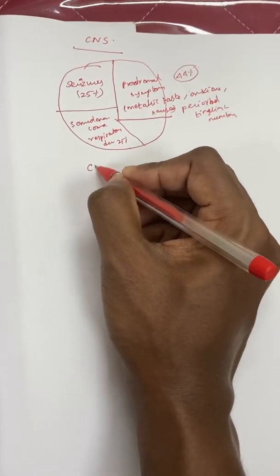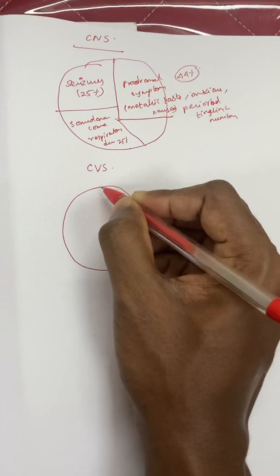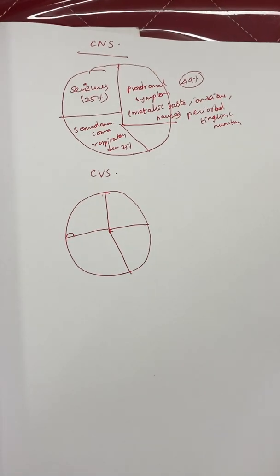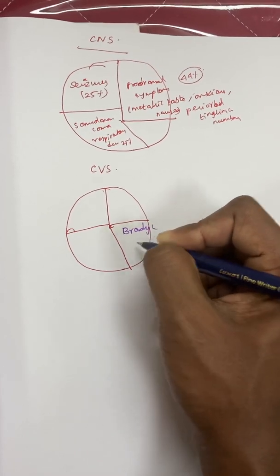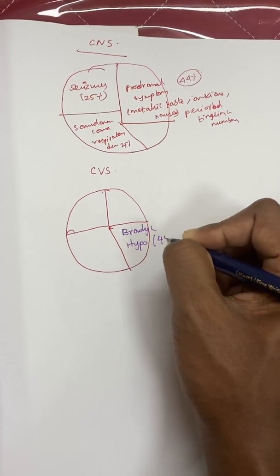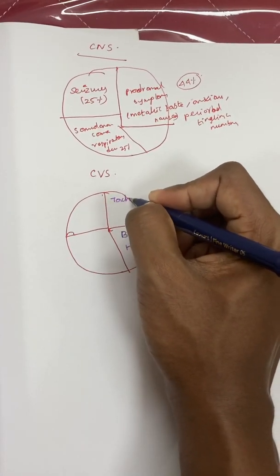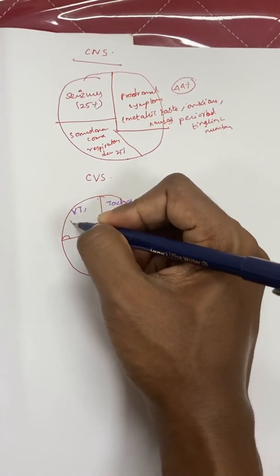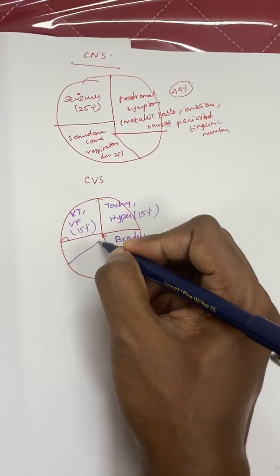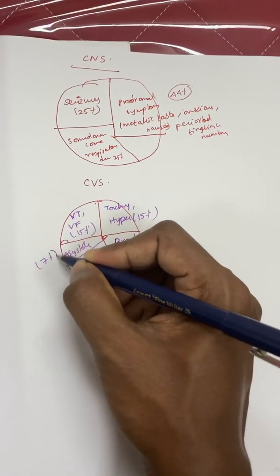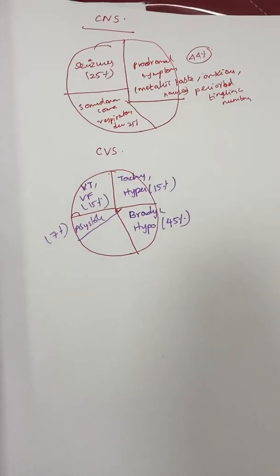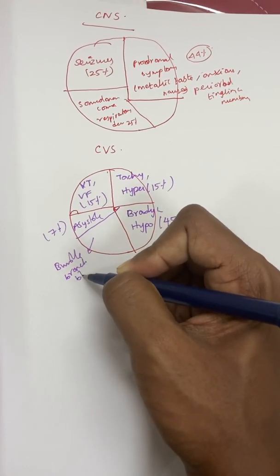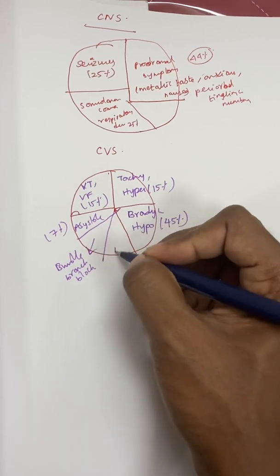In CVS involvement, the most common findings are bradycardia and hypotension, seen in 45% of patients. Tachycardia and hypertension are seen in only 15%. Arrhythmias — most commonly ventricular tachycardia and ventricular fibrillation — account for 15%. Asystole occurs in 7%. Bundle branch block is also reported. The least common finding is ventricular ectopics, seen in only 2% of cases.